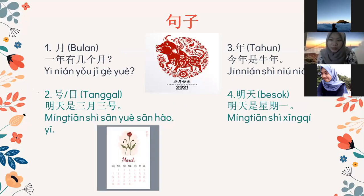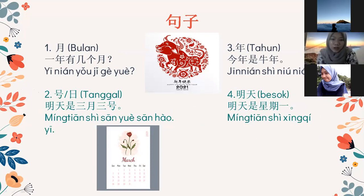Kita bahas kosa kata kalimatnya ya. 月 artinya bulan. Contoh kalimatnya: yi nian you ji ge yu. Yang kedua, 号 atau 日 artinya tanggal. MingTian 明天 si san yue san hao — artinya besok, bulan tiga, tanggal tiga.